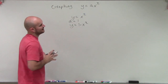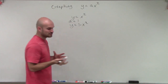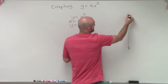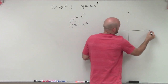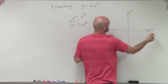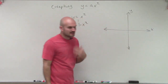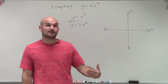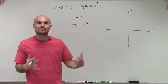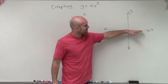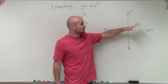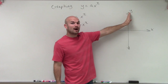When graphing a quadratic, just like when we were graphing lines, it's important to understand that we graph them on an x and a y axis — here's our y axis and here's our x axis. Remember, a quadratic or any graph is going to be a set of x and y coordinates. Therefore, every point on the graph is going to have an x coordinate and a y coordinate.